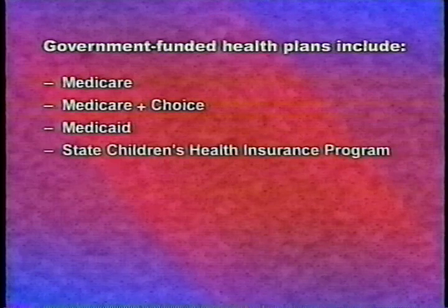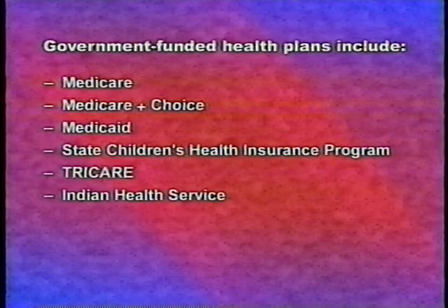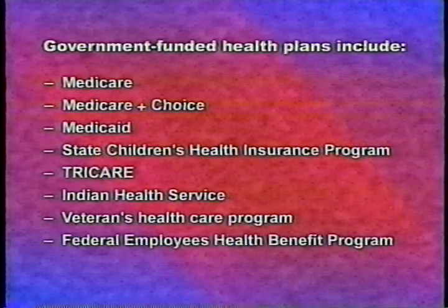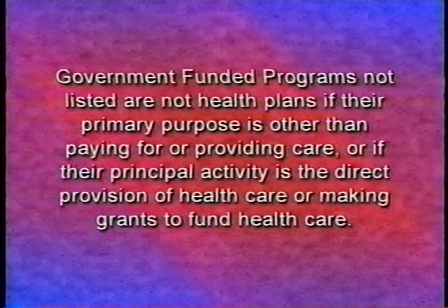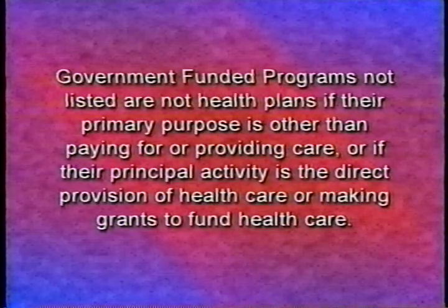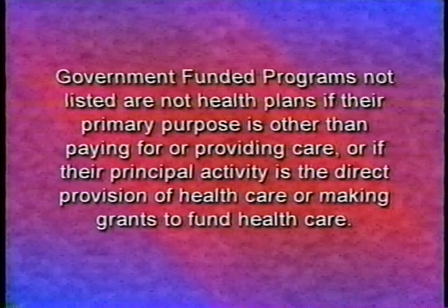Plans providing health benefits through a mix of purchased insurance and self-insurance should combine proxy measures to determine total annual receipts. Most government-funded programs are considered health plans, including Medicare, Medicare Plus Choice, Medicaid, State Children's Health Insurance Program, TRICARE, Indian Health Service, Veterans Health Care Program, and the Federal Employees Health Benefit Program. Government-funded programs other than those listed are not health plans if their primary purpose is other than paying for care, or if their principal activity is the direct provision of health care or making grants to fund health care. If you are a covered entity, you are responsible for complying with all administrative simplification rules and meeting all compliance deadlines.